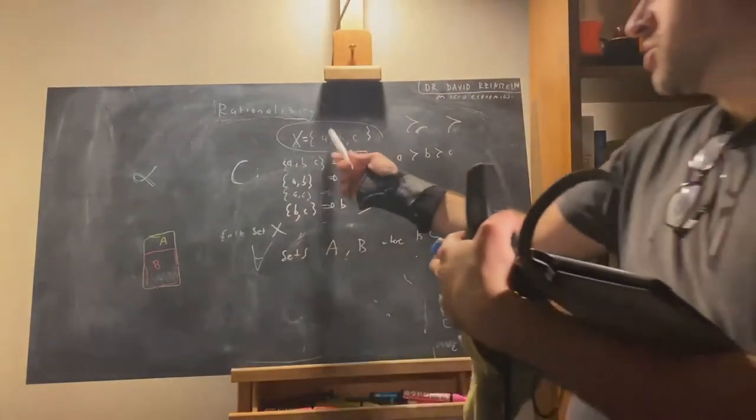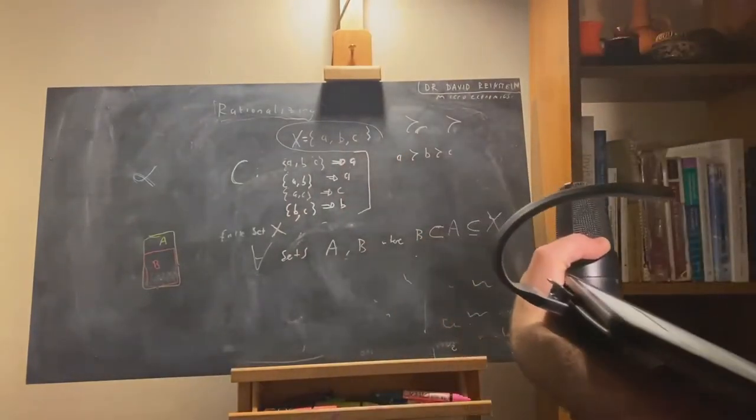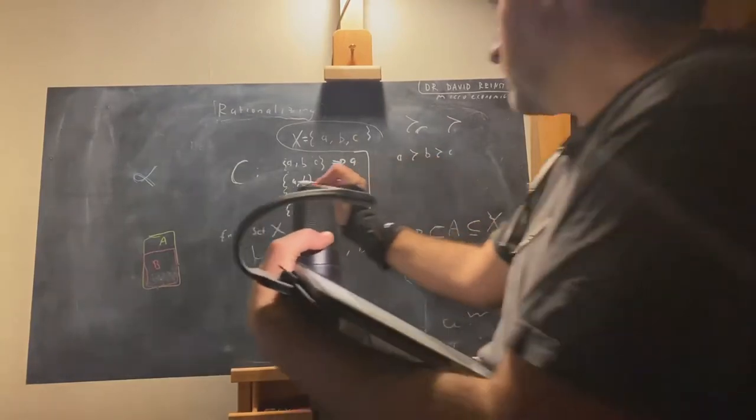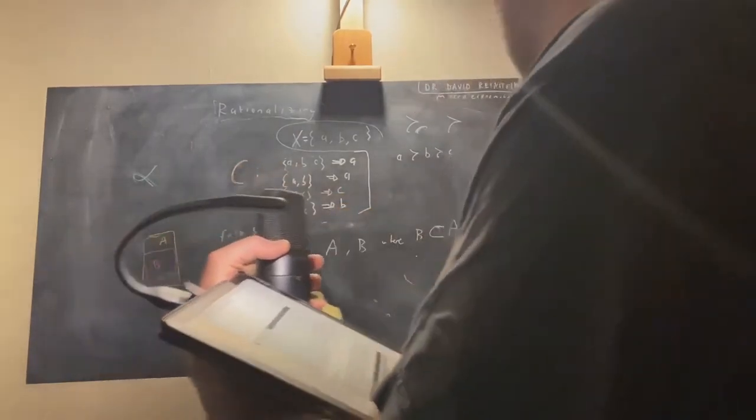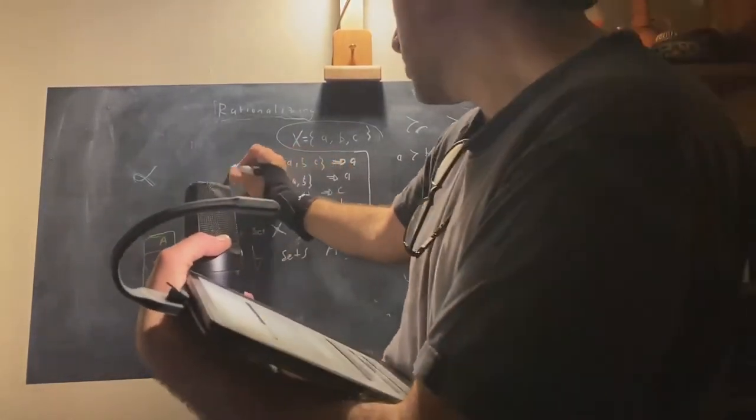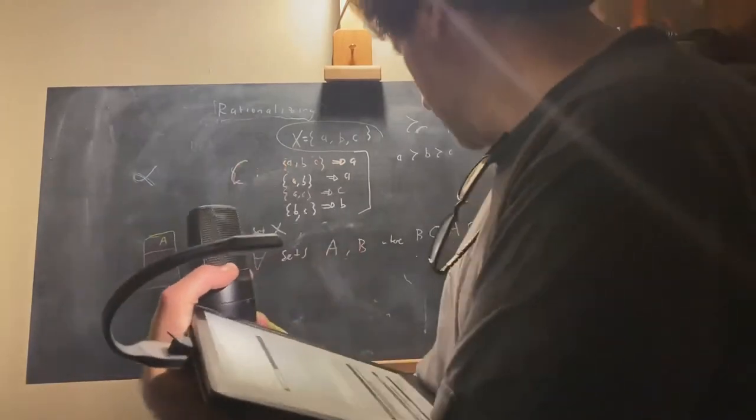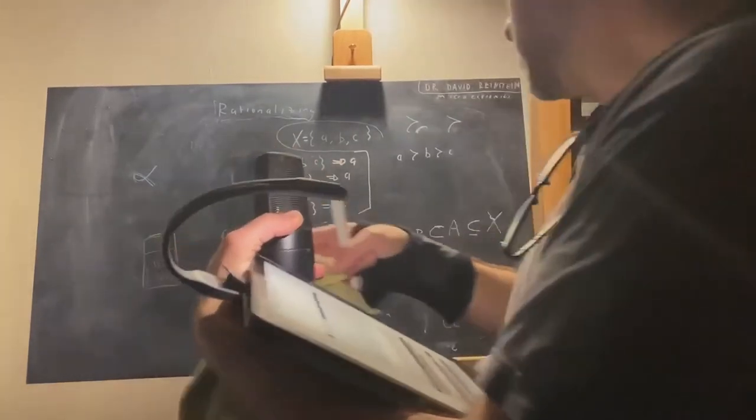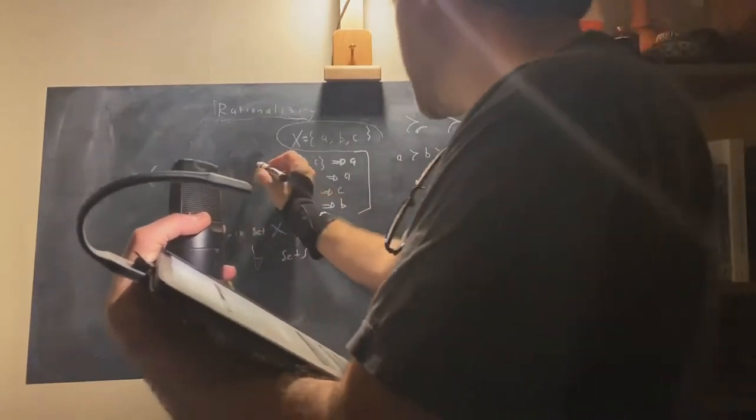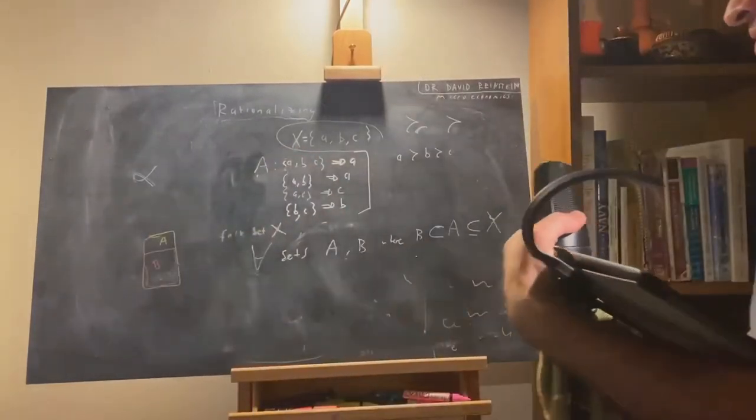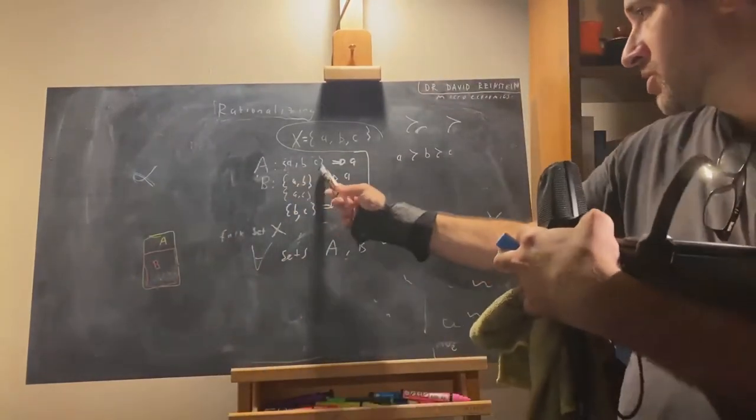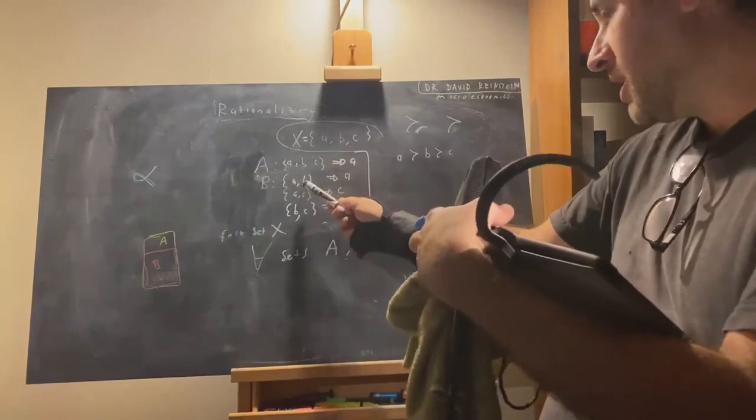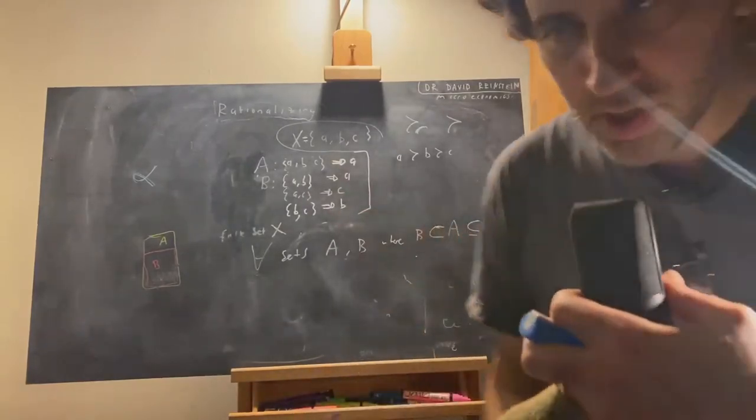Here we have the big set X consisting of elements A, B, and C. Suppose I define this as A and this as B. Here we have A has all of the elements that B has, but B has some elements that A does not.